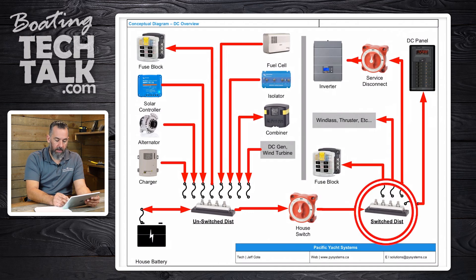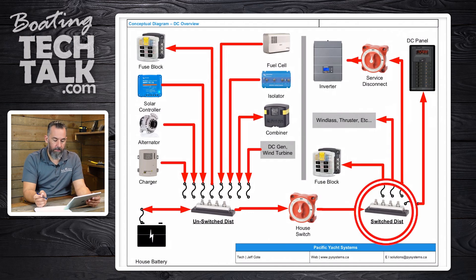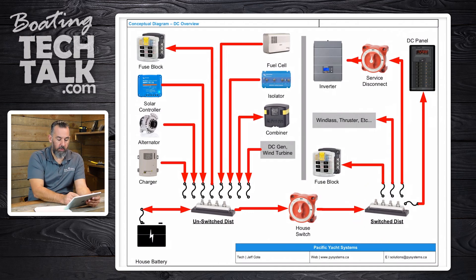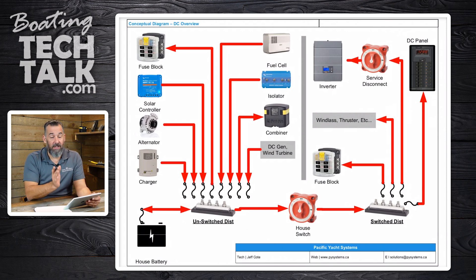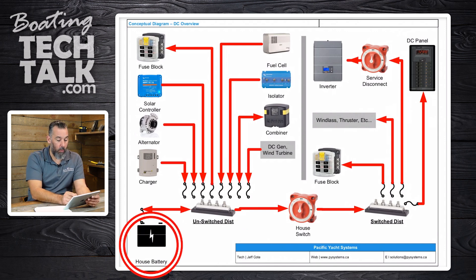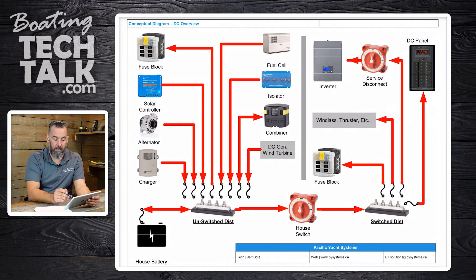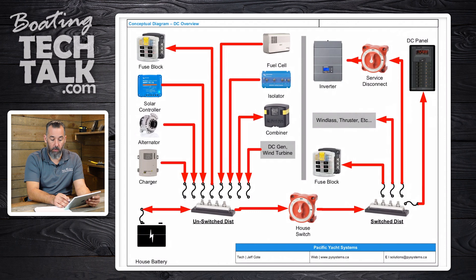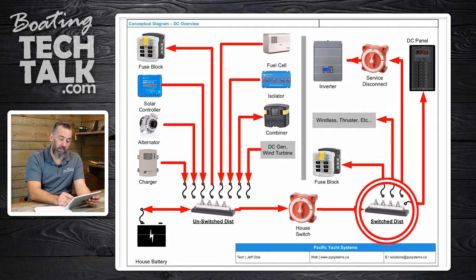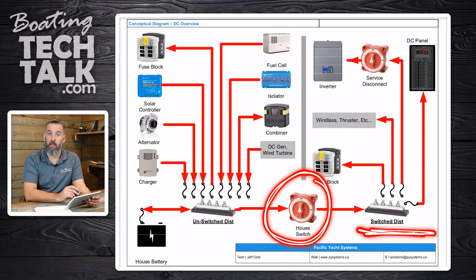Here we've got the switch distribution — I'm highlighting here. That was switch distribution, and unswitched distribution is right here. Notice how the unswitched distribution is effectively connected directly to the battery. Yes, there is a fuse, but there is no switch. The switch is after. So the big distinction is you've got this unswitched distribution here and your switch distribution over here, and the switch is what actually turns the circuits on and off.